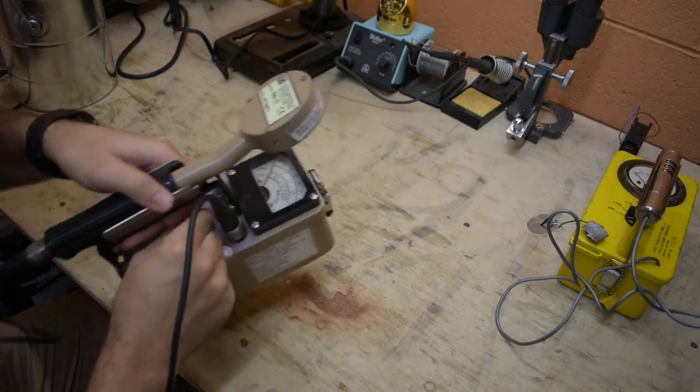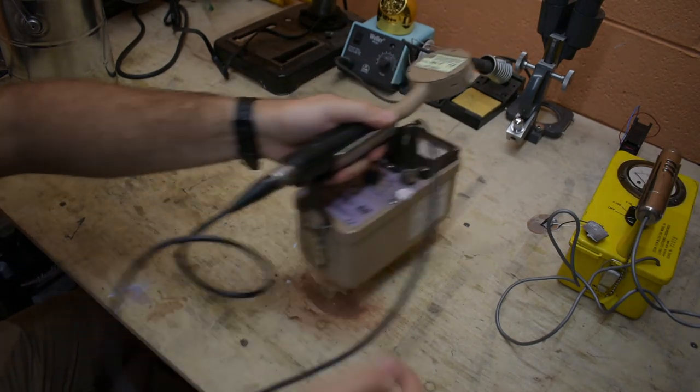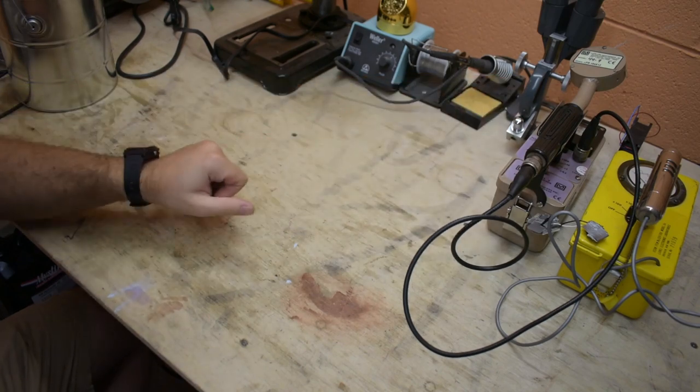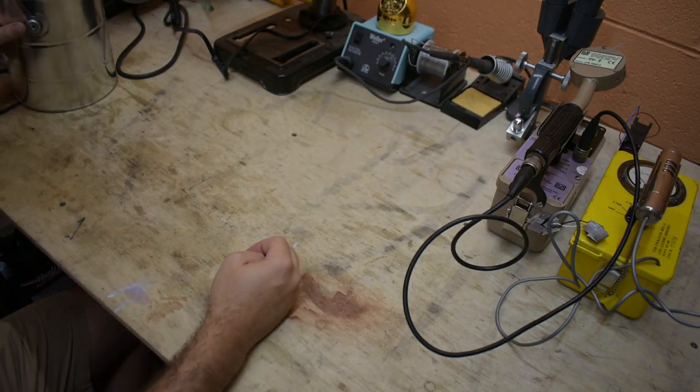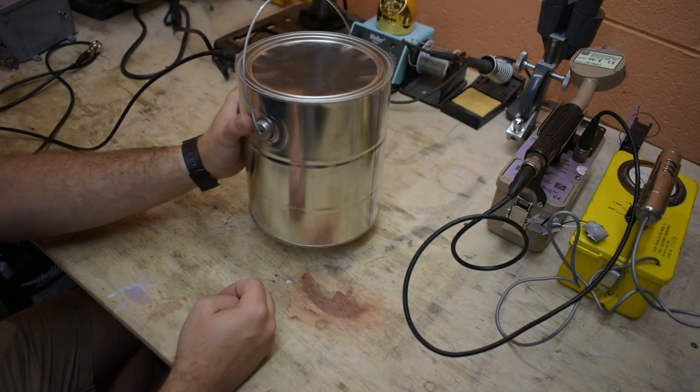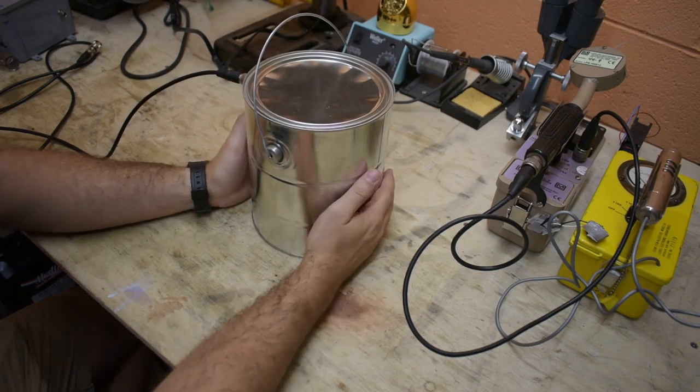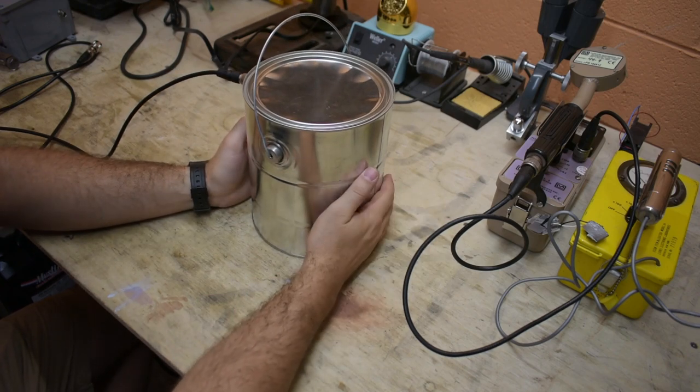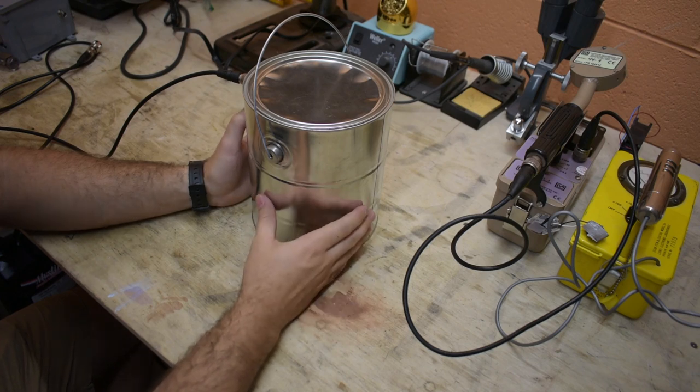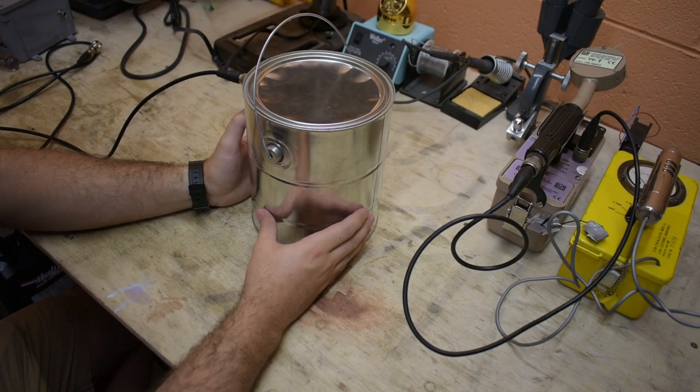And as I kept reading about radiation detection, I kept coming across people that were making scintillation detectors. A scintillation detector works in a slightly different manner than the Geiger tubes work. So inside of here is a piece of plastic that when it gets hit by a gamma ray it gives off a flash of light.